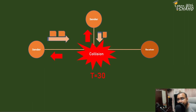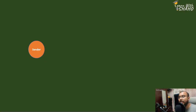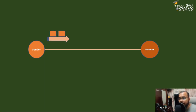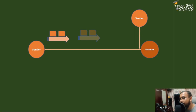The collision happens at the midpoint, and the data returns back to the sender who sent it. The collision occurs at the middle point, and both senders receive the collision signal. After approximately the same amount of time — roughly two propagation times — the sender receives the collision information.